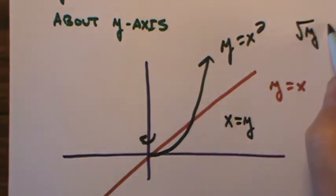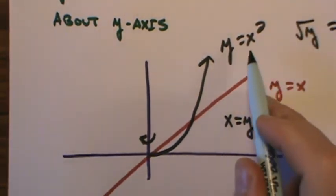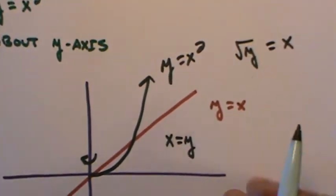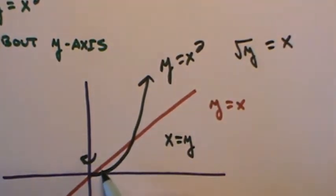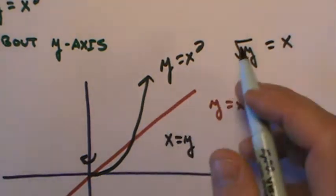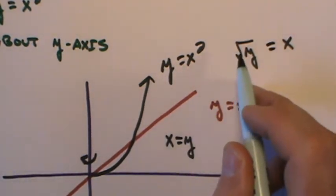But when I do square root y, because all I did was introduce a radical to both sides, remember that this would be plus or minus. Because I'm on the right side of my parabola, it would be the positive piece, so it's going to be square root y.